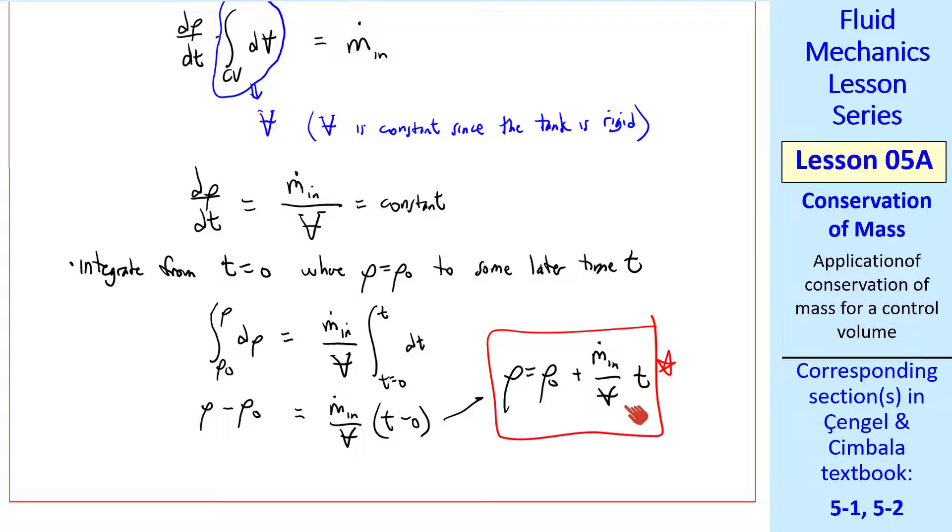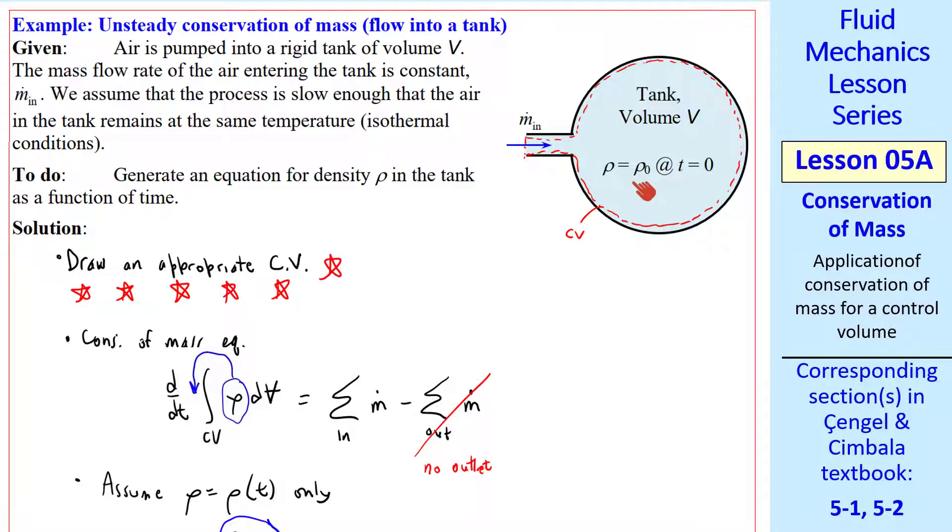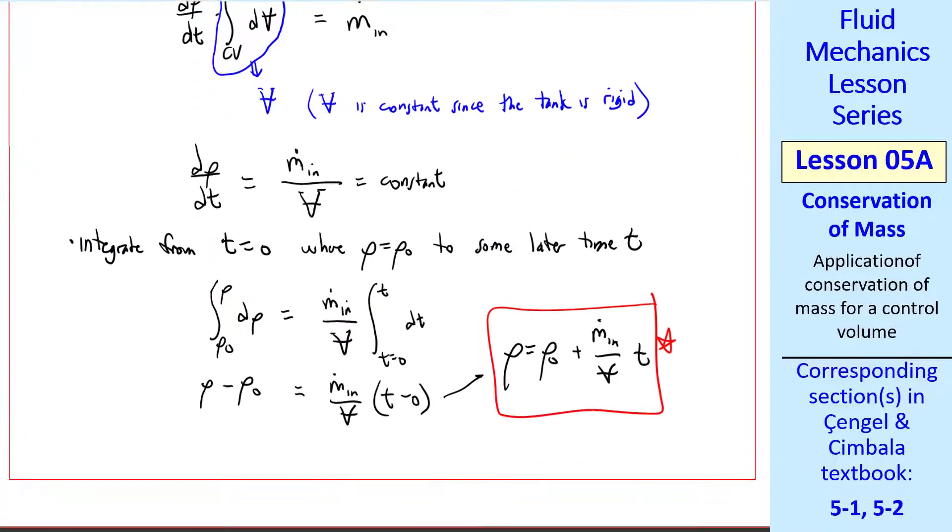Or finally, rho equal rho naught plus m dot in over v times t. Since these are constants, density increases linearly with time. This makes sense if you think about how this problem is set up. We have a constant mass flow coming in, so the density has to increase linearly with time. If m dot were not constant, the integral would get more complicated, but the procedure is the same.